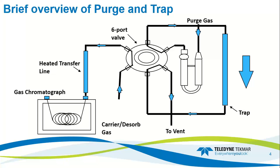Trapping these VOCs helps create a smaller band of analytes traveling to the GC column, producing greater signal-to-noise ratios and lower area-to-height ratios, generating sharper peaks and better sensitivity and resolution. Once VOCs are captured, the trap is heated, causing the VOCs to desorb, and carrier gas is used to desorb VOCs off the analytical trap and carry them through the heated transfer line to the GC.